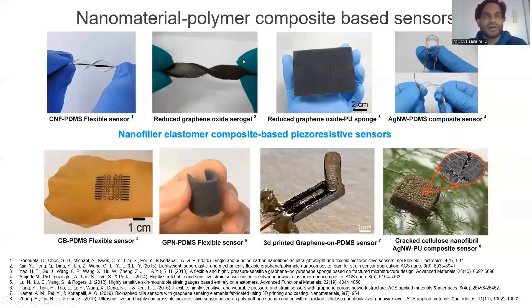In the literature, there are several materials used especially for piezoresistive sensors. Here are a few designed by our group: carbon nanofiber film on PDMS flexible sensors, graphene oxide and reduced graphene oxide for sponge-related applications, silver nanowire PDMS composites, carbon black PDMS flexible sensors for skin integrated applications, graphene nanoparticle PDMS flexible sensors, and 3D printed graphene on PDMS sensors.